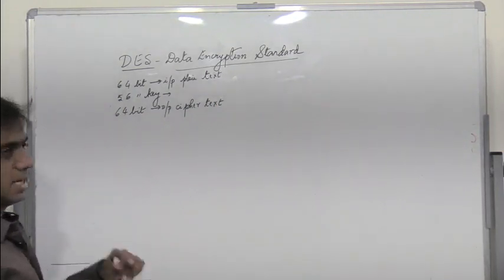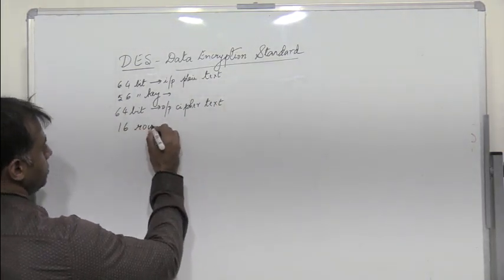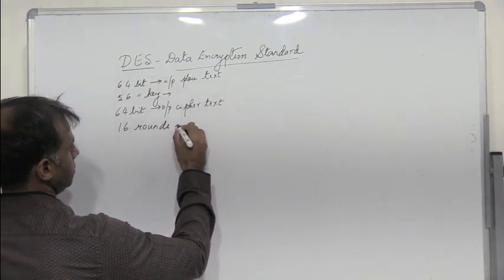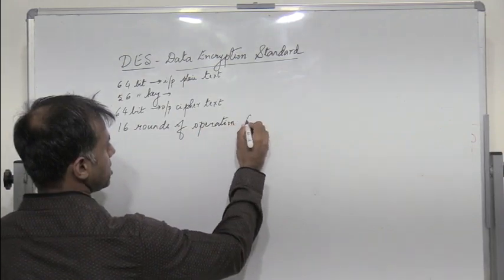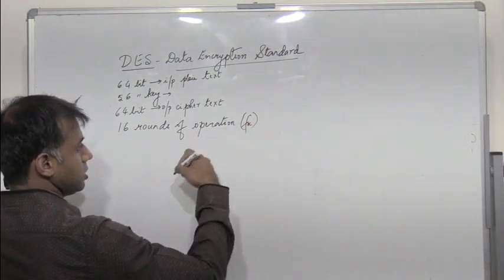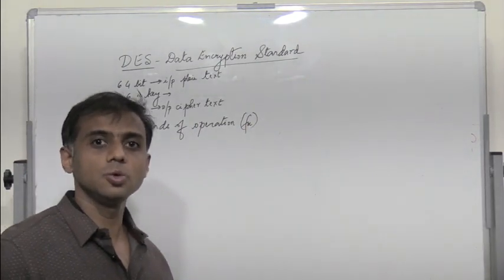In DES, there are 16 rounds of operation, which is usually referred to as FK. So there are 16 rounds of operation, and each operation would use a sub-key.